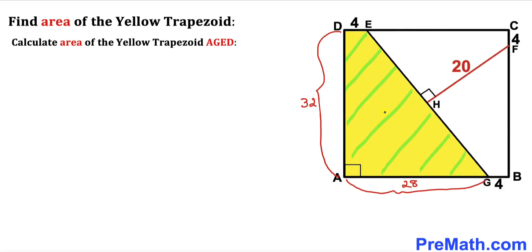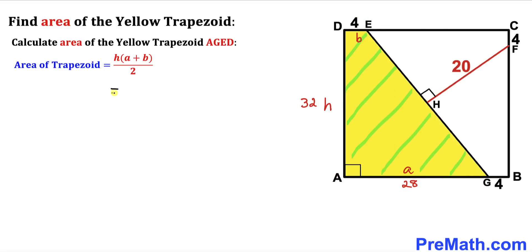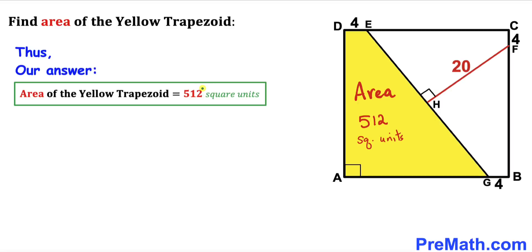For our final step, let's calculate the area of the yellow trapezoid AGED. Recalling the trapezoid area formula: Area = H × (a + b) / 2. In our case H = 32, base a = 28, and base b = 4. Filling in: 32 × (28 + 4) / 2 = 32 × 32 / 2 = 512 square units. So the area of this yellow trapezoid is 512 square units.